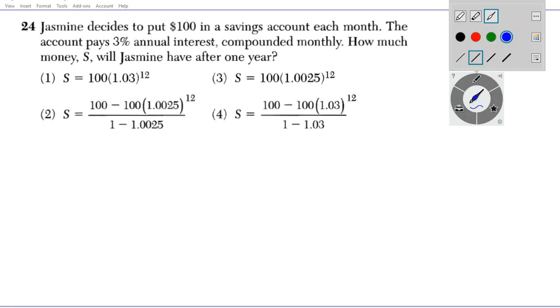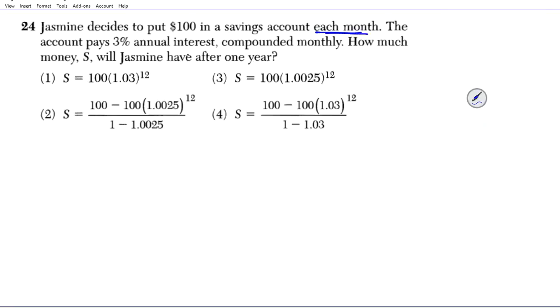Each month Jasmine puts in $100. Let's look at the appropriate formula that applies to this scenario. We'll call it compound interest with contributions.